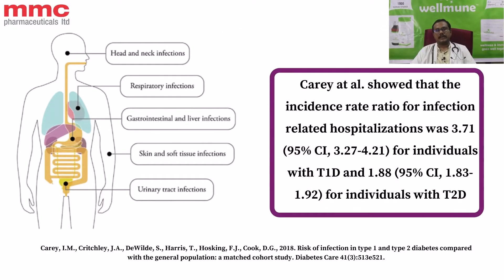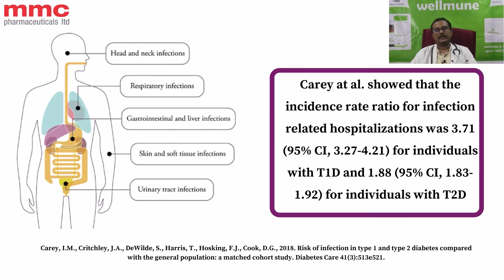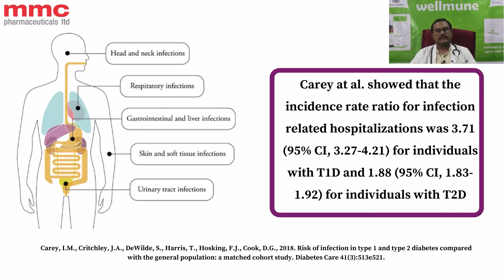A person with diabetes mellitus can get infections like lung infection, intestinal infection, skin and subcutaneous tissue infection, CNS infections, and more. There is a study done by Carey et al. which says that the incident rate ratio for infection-related hospitalization is almost 3.7 times in people with type 1 diabetes and 1.8 times in people with type 2 diabetes mellitus compared to normal individuals.